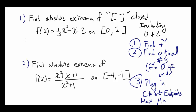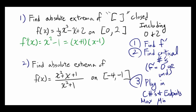We start by finding f prime of x, which is x² - 1, or factored as (x + 1)(x - 1). Second, find the critical numbers of this function — that's when f prime is 0 or undefined. In this case, f prime is 0 when x = -1 or x = 1.